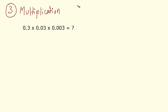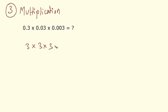Now, let's go ahead and look at how we multiply decimal numbers. So, we have these 3 decimal numbers and we have to take the product of these. The process is very simple — we write the numbers without the decimal point and multiply them. So, I have 3 into 3 into 3. 3 into 3 is 9, and 9 into 3 is 27. But this is not the final answer — I am still missing the decimal point. Where in this answer would be the position of the decimal point?